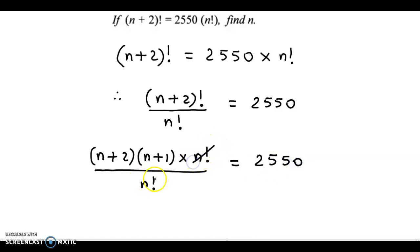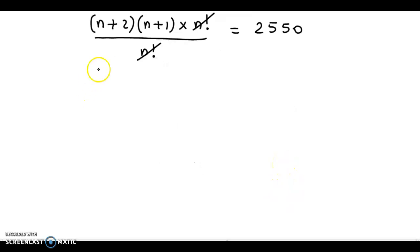Now, we could cancel out n!. So, what we have is (n+2)(n+1) = 2550.